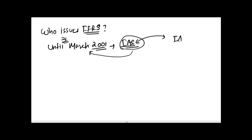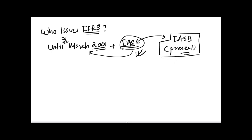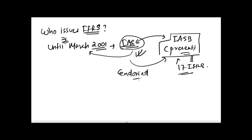Due to political reasons, the IASC was replaced by another body — the IASB, the International Accounting Standards Board, which is the present issuing authority. The IASB has issued around 17 IFRS standards so far, and has also endorsed certain standards previously issued by the IASC. So if someone asks who issues IFRS, the answer is currently the IASB.